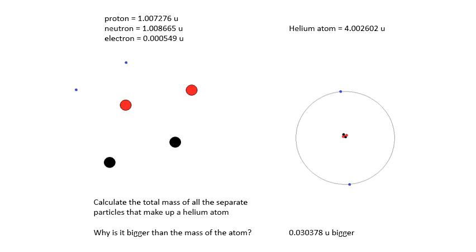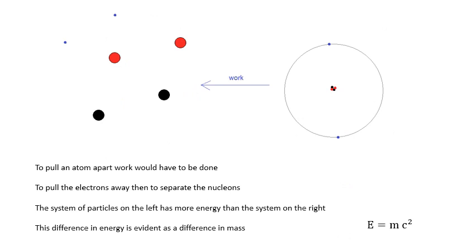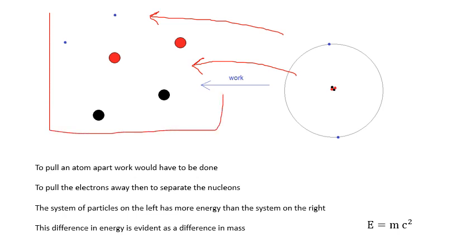Why is that? If you imagine we started with the atom and tore it to pieces, first you'd pull the electrons off — that would only take a few electron volts, dead easy. But then you'd have to pull apart the nucleus, and to do that you're going to have to work against the strong nuclear force. That's going to take a lot of energy. Because you have to do a lot of work to get from there to there, the system of separate particles has more energy. That system on the left has more energy than the whole atom, and because it has more energy, it has a bigger mass.